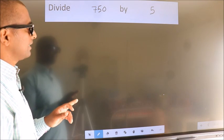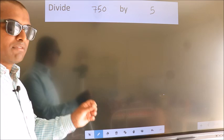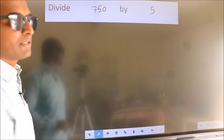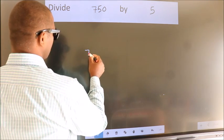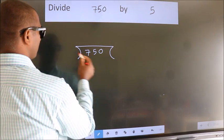Divide 750 by 5. To do this division, we should frame it in this way: 750 here, 5 here.